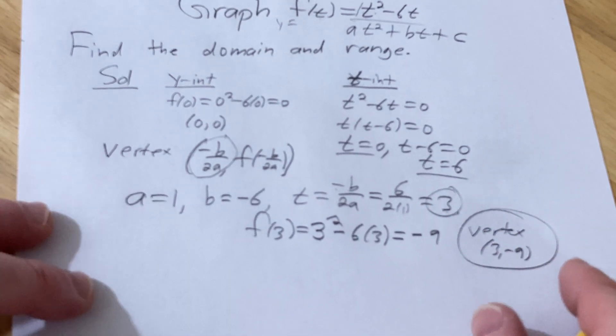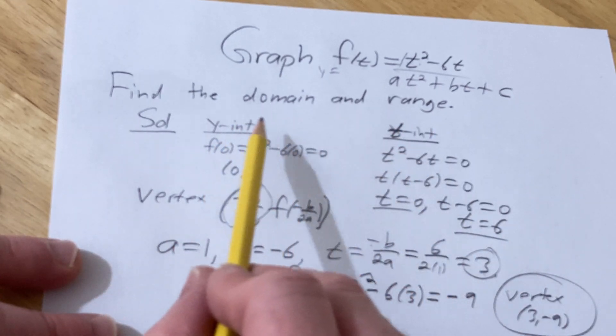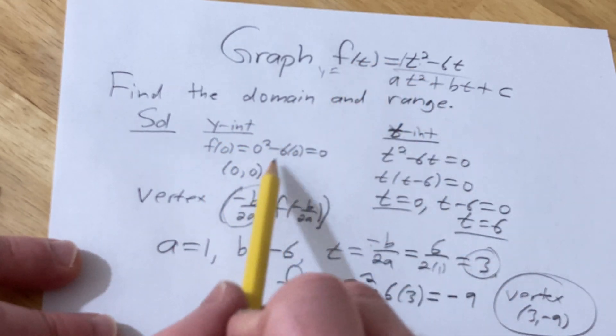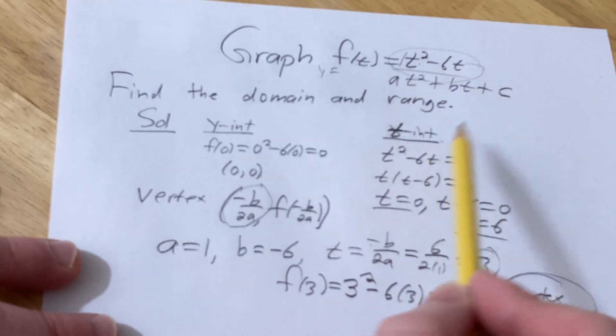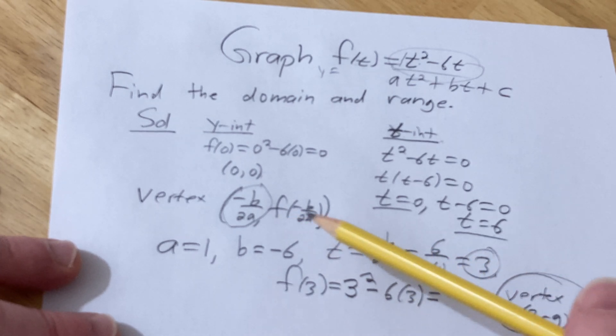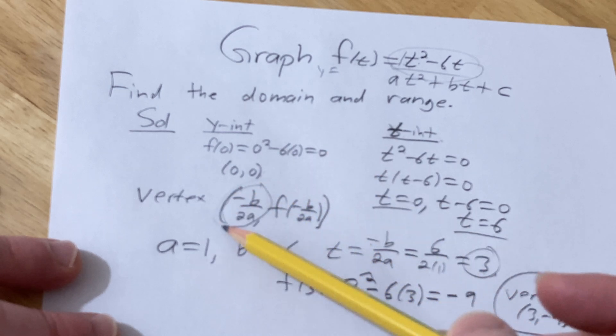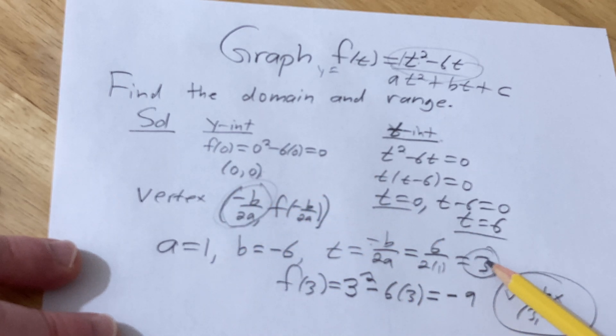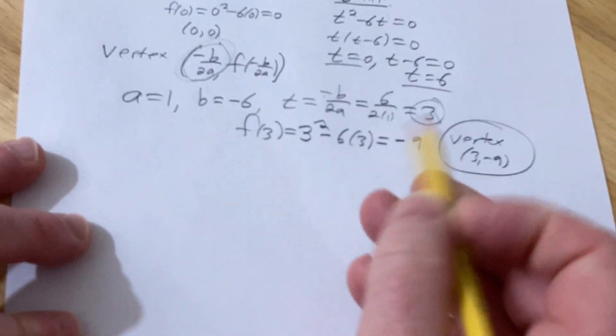Now we're going to put everything together and graph it. But first I'm just going to recap what we did. We started by finding the intercepts. To find the y-intercept you set t equal to 0, we got 0, 0. To find the t-intercept you take the whole thing equal to 0, so you got 0 and 6. To find the vertex we use this formula. We identify a and b. a is 1, b is negative 6. Compute negative b over 2a, take the result, plug it into the original function, that gives you the y-value of the vertex.